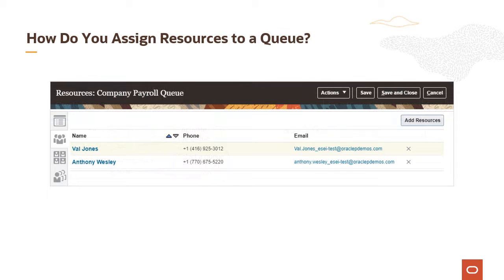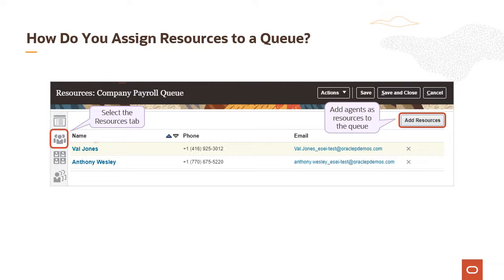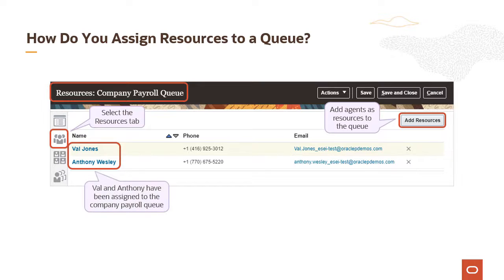Each queue should have one or more agents who are assigned as resources. On the edit page for your selected queue, select the resources tab. Click add resources to add agents to the queue. In this example, Val and Anthony have been assigned as resources to the company payroll queue. Note that Val and Anthony can be assigned as resources for multiple queues.